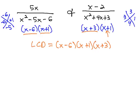There's no exponents, so we don't need any exponents. And now that we know what the LCD is, we can multiply by the missing factors.